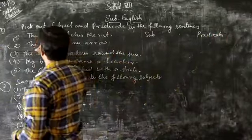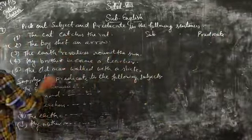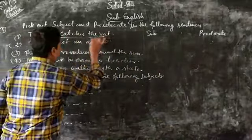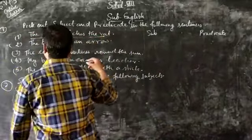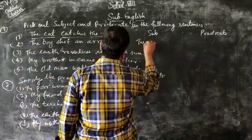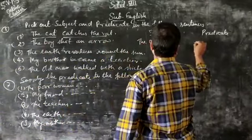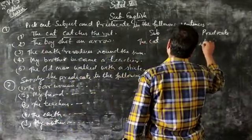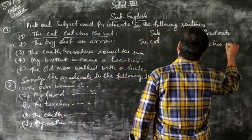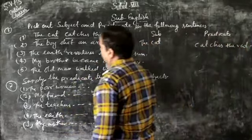First sentence: identify what is the subject and what is the predicate. The subject will be identified, and the predicate will follow, like this.